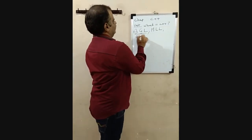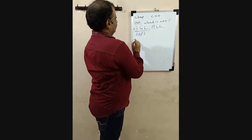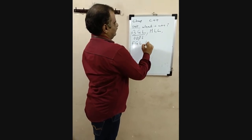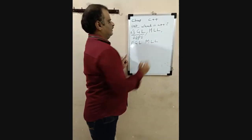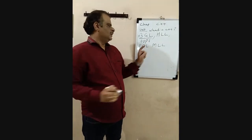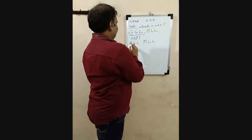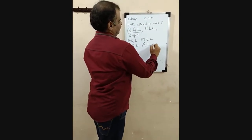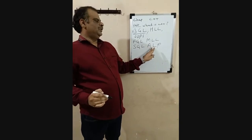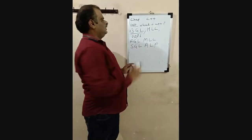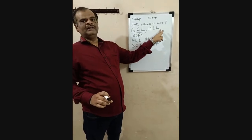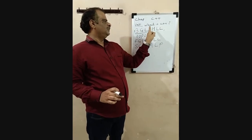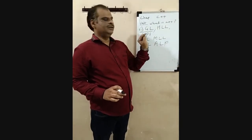Third generation language means: the first generation language is machine-level language, the second generation language is assembly language, and the third generation is high-level language. Till today there are five generations of language, and C++ comes into the third generation.